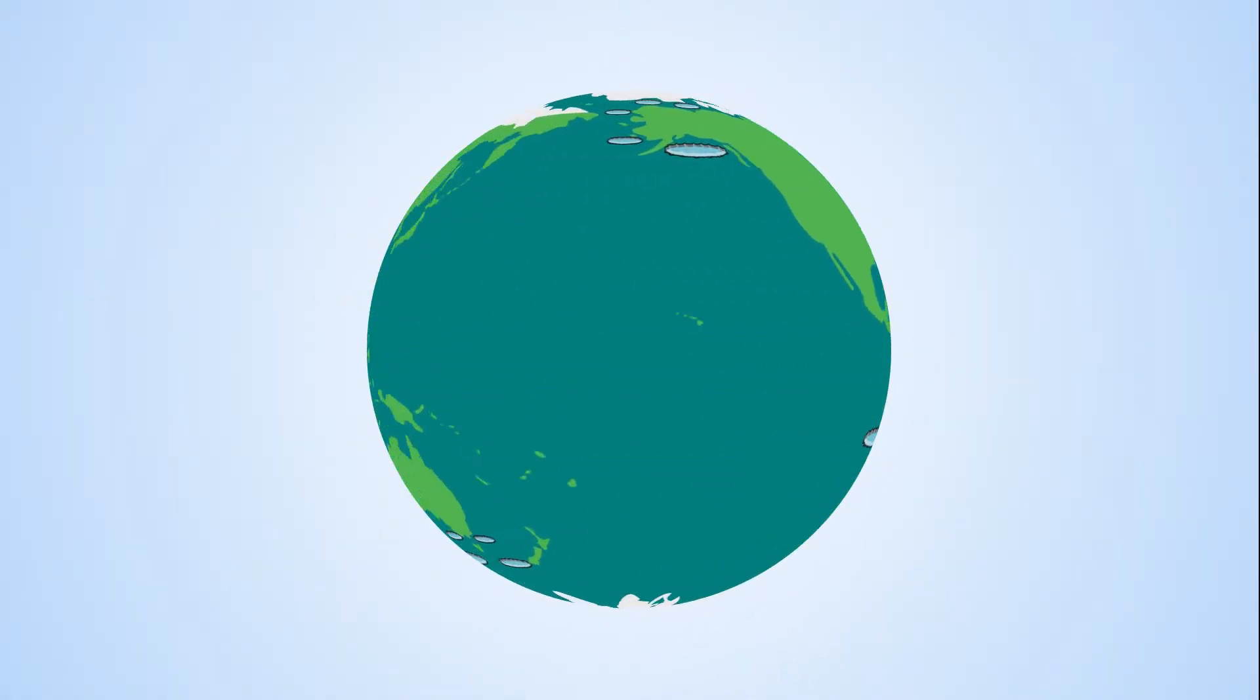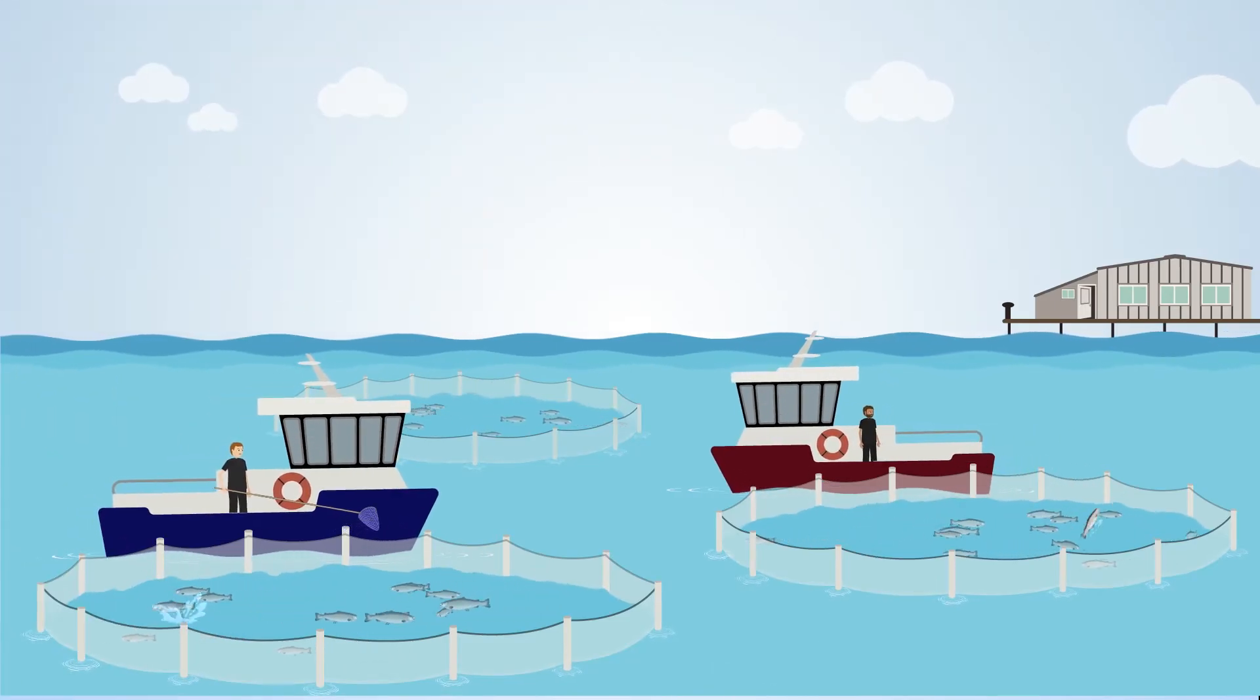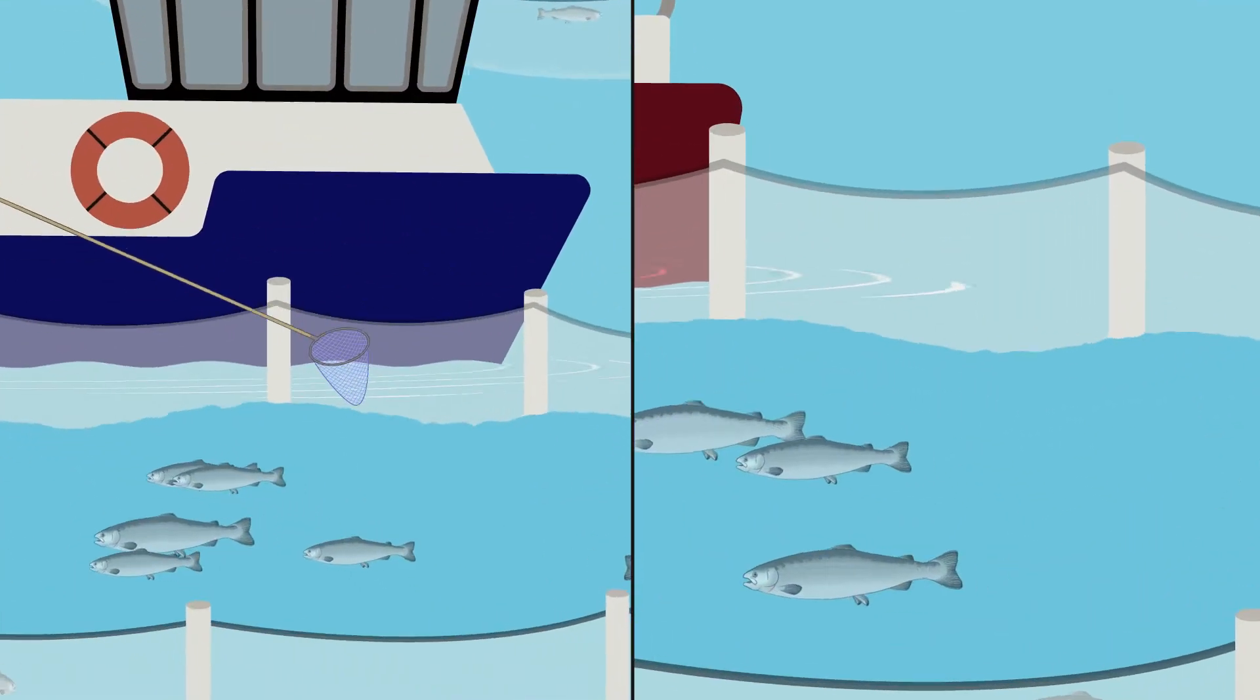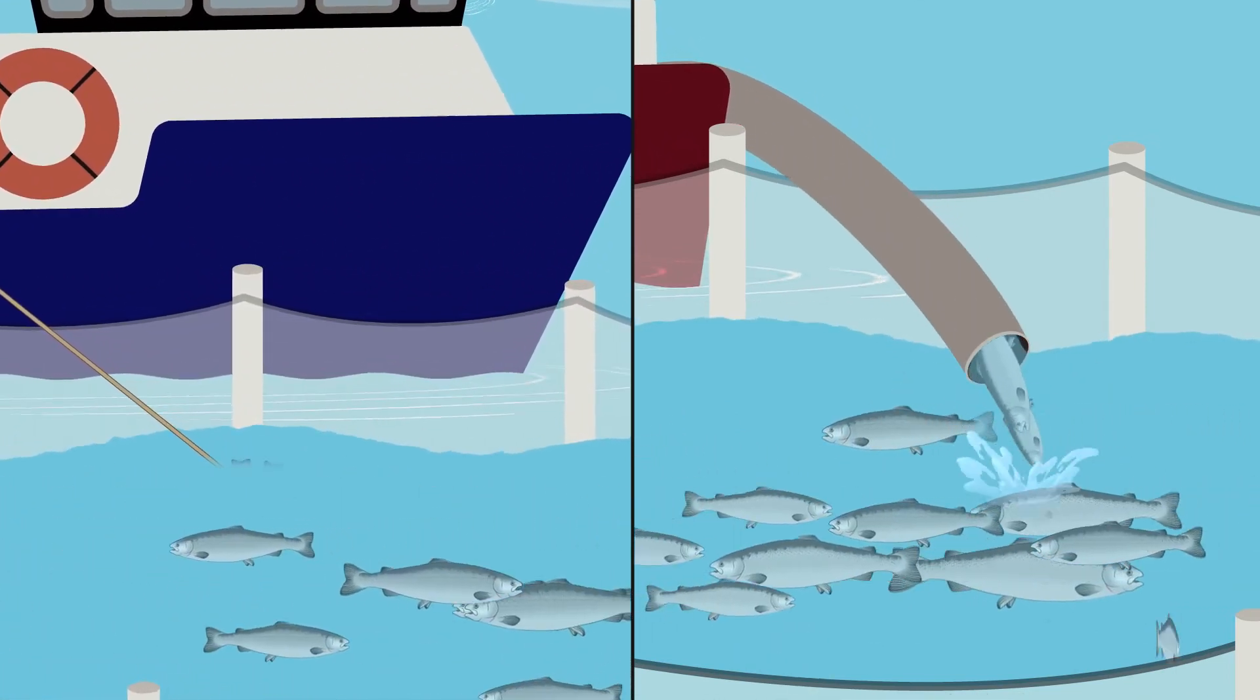Aquaculture is increasing with our growing population. Therefore, healthy fish stocks are important for sustainably meeting the world's demand for food. Atlantic salmon are kept in pens, where farming operations can stress the fish and damage the skin.